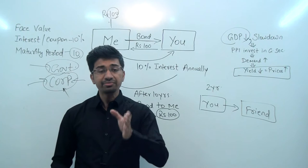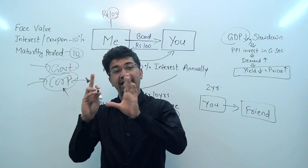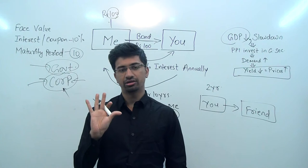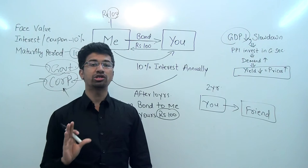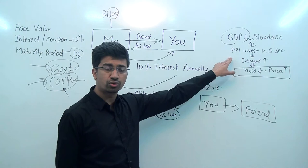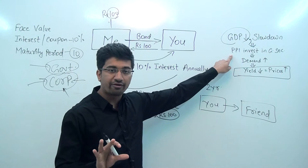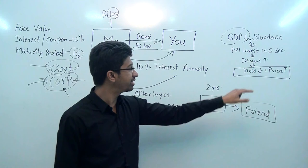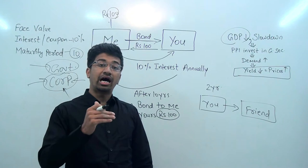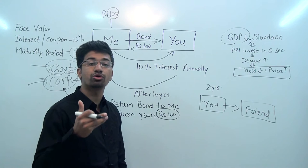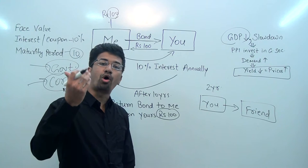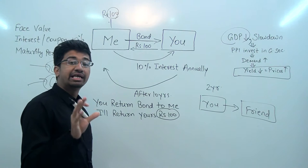So investors want to buy government bonds, also referred to as government securities. They start investing in government securities because these are safer. As more people invest in government bonds, the demand for government bonds increases. When the demand for any product increases — as we learned in inflation — its price increases.